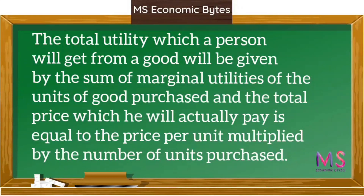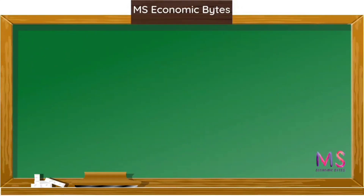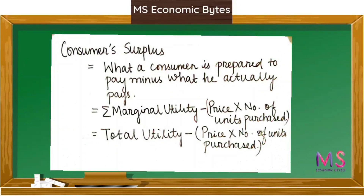The total price a consumer actually pays is equal to the price per unit multiplied by the number of units purchased. So consumer surplus equals what a consumer is prepared to pay minus what he actually pays. What a consumer is prepared to pay is the summation of marginal utilities, which equals total utility, minus the price per unit multiplied by the number of units purchased.